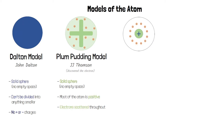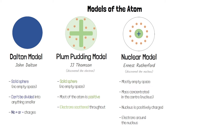The next model was the nuclear model, which was developed by Ernest Rutherford who discovered the nucleus. This model was unlike previous models in that it was mostly empty space rather than being a solid sphere, and most of the mass was concentrated in the centre in an area called the nucleus. The nucleus is positively charged although it doesn't contain any protons or neutrons. We also have electrons and they are arranged around the nucleus but they're not in shells.